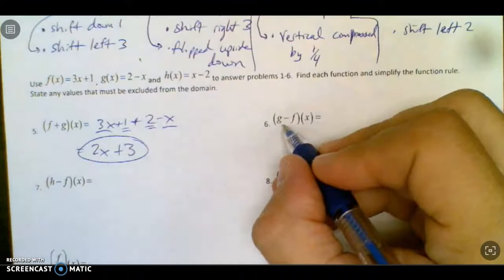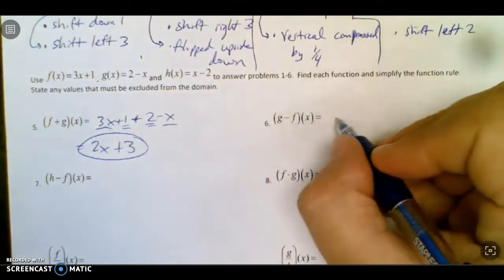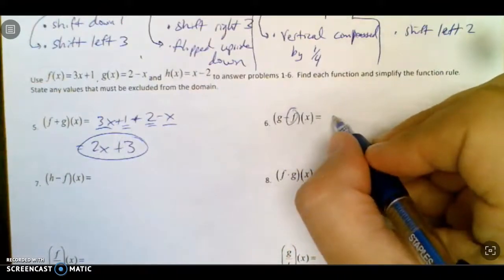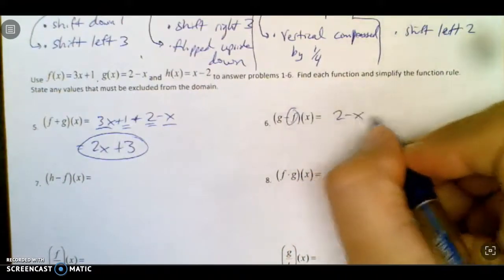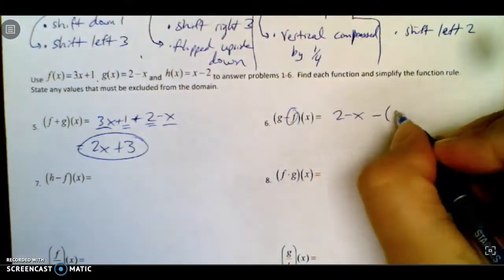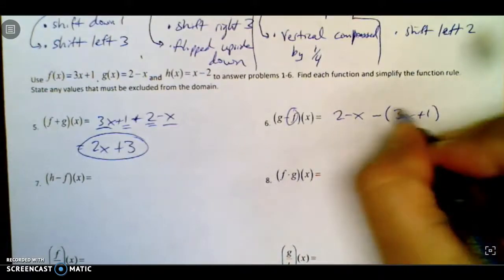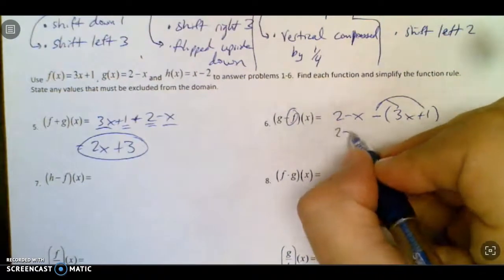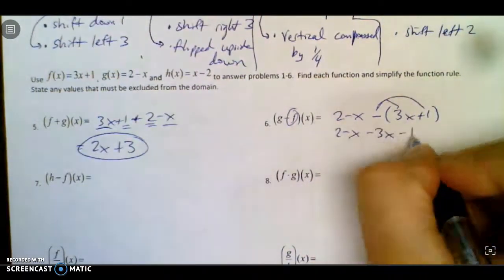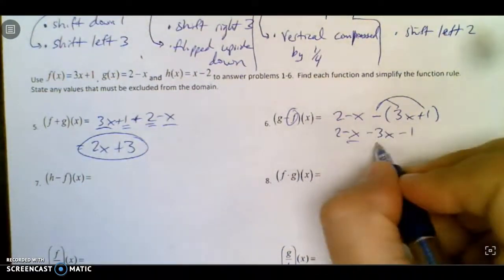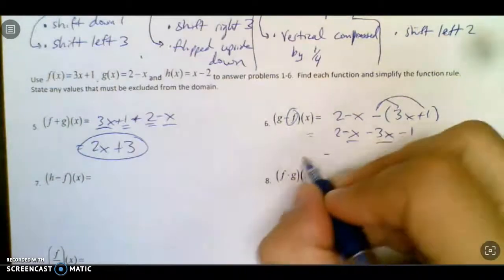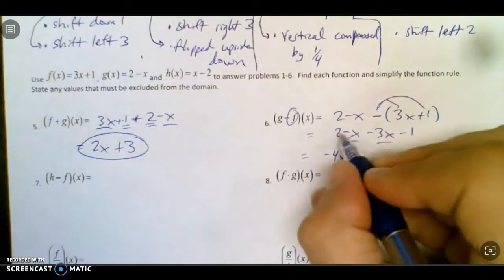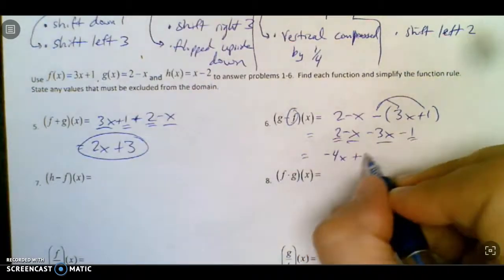Now you do have to be more careful in here. One, be careful of the order. And two, you have to put the second thing in parentheses or you're going to mess it up. So I have 2 minus x minus, and you've got to put parentheses around this. So that negative sign distributes to both parts. So it's really 2 minus x minus 3x minus 1. And then we combine like terms again. Negative 4x and plus 1.